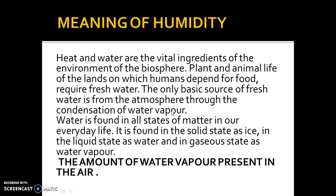Water is the most important substance as it is essential for the survival of all living organisms. Water is found in all states of matter: solid state, liquid state, and gaseous state. We will learn this with the help of the water cycle in the next slide. The amount of water vapor present in the air is known as humidity. The important instrument used to measure humidity is the hydrometer, also called the wet and dry bulb thermometer. Humidity varies from place to place and time to time.